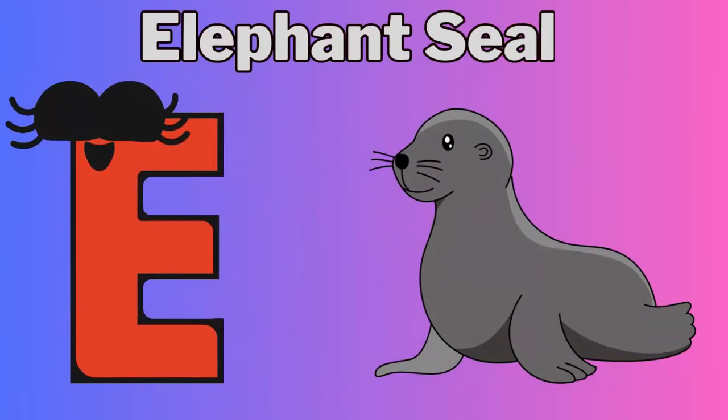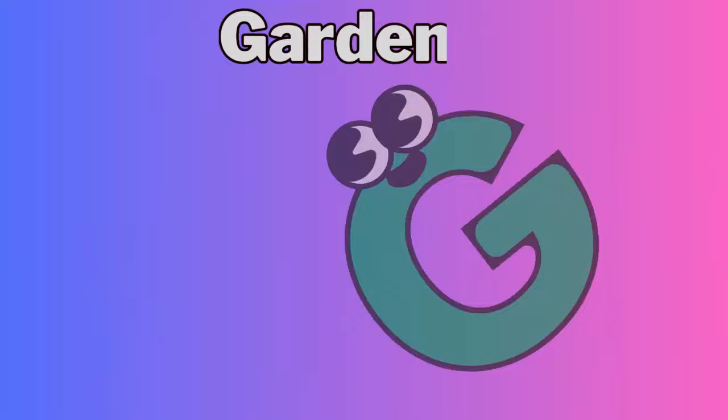E. E for elephant seal. F. F for flounder. G. G for garden eel. H. H for hermit crab.